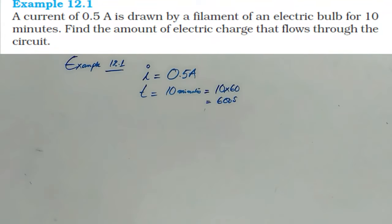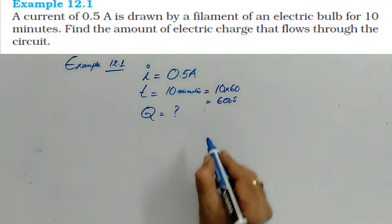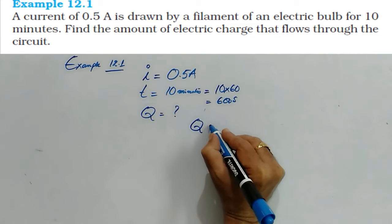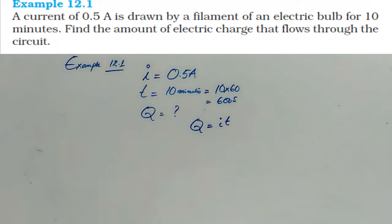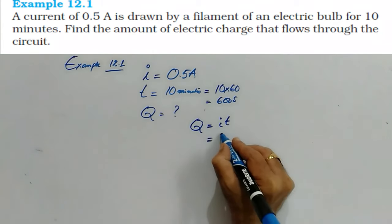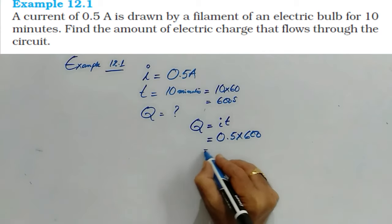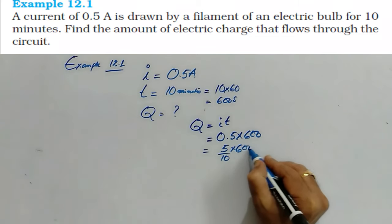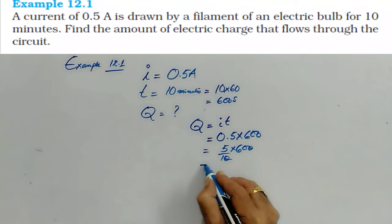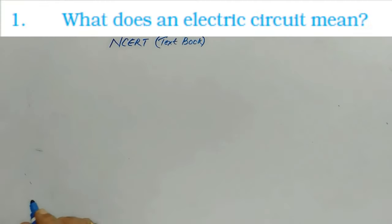Now the charge is asked. We know the formula Q is equal to current times time, so here 0.5 times 600. We can write this as 5 by 10 and 600, so the final answer is 300 coulombs.